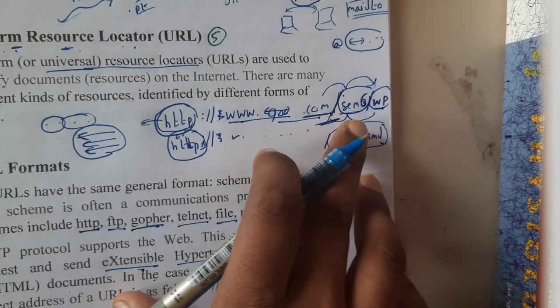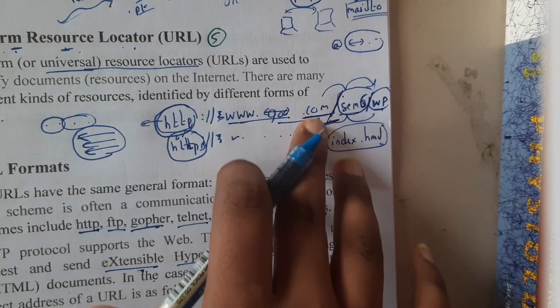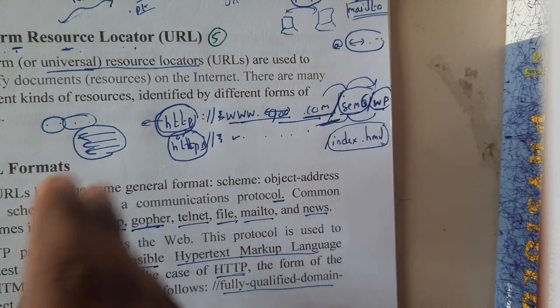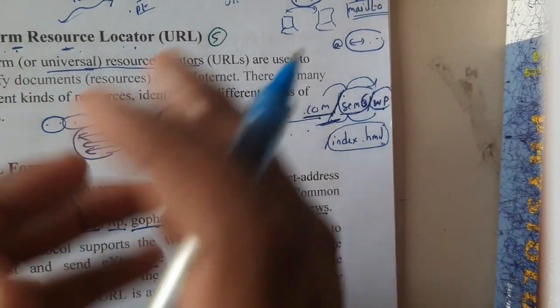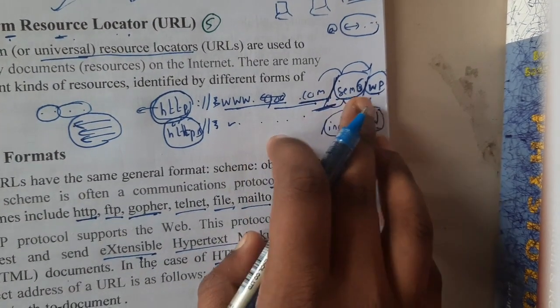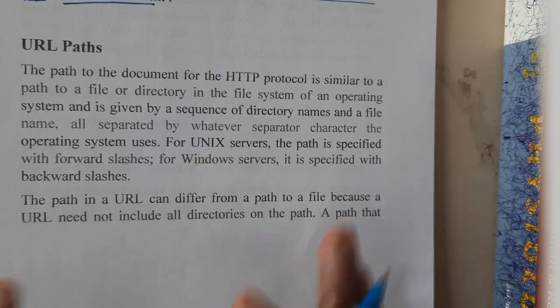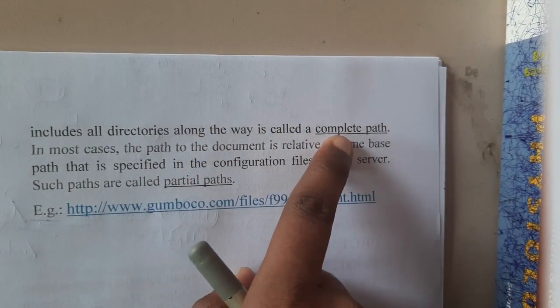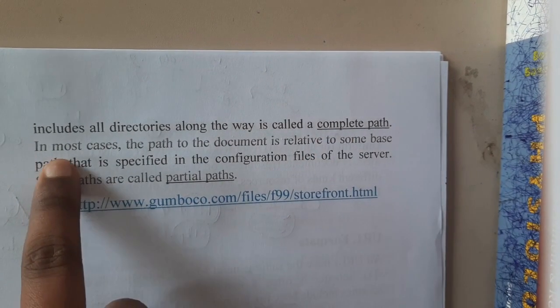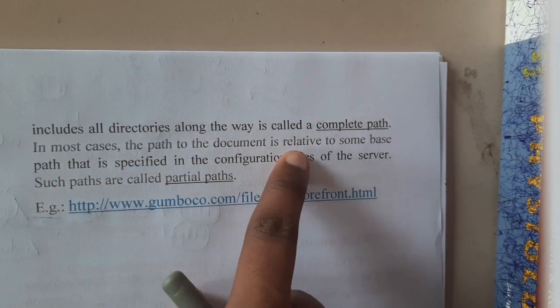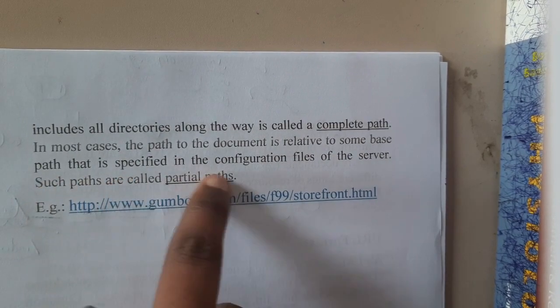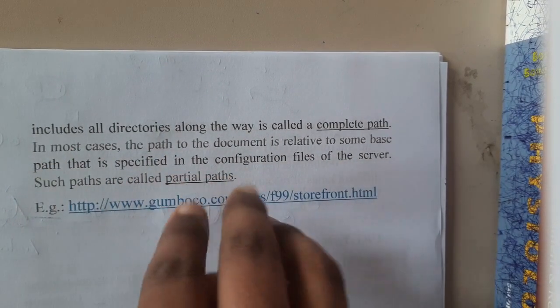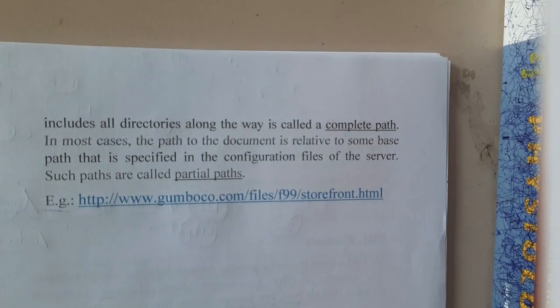The path in the URL can differ from the path to the file because the URL need not include all the directories. For security reasons, most websites do not show these kinds of paths, because hackers can directly identify the path and attack the server to grab important data. A path that includes all the directories is called a complete path. In most cases, the path is relative to some base path specified in the server configuration.